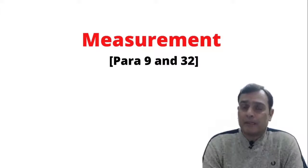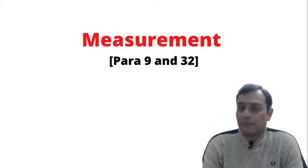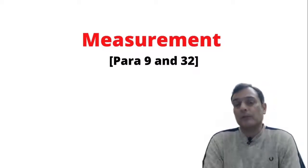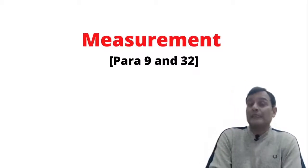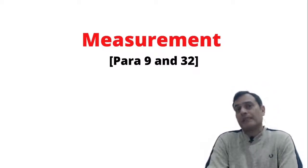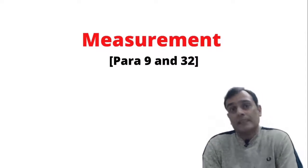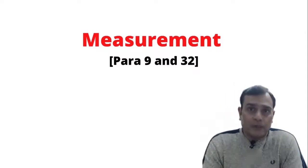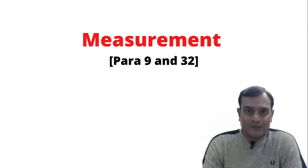Let's dig further into Para 9 as well as Para 32 and identify what is the measurement principle relating to three different kinds of inventory: raw material, WIP, as well as finished goods.